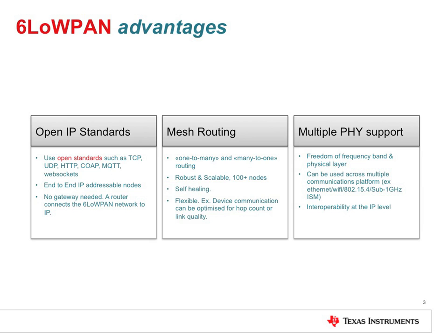There are three distinct advantages to a 6LowPAN system. Firstly, 6LowPAN uses open IP standards. This includes many well-known standards such as TCP, UDP, HTTP, and WebSockets that many developers are already familiar with. Another advantage is the lack of an application layer gateway. The only functionality needed on the edge router is a bridge between the RF and Ethernet network. This bridge is incorporated in the 6LowPAN stack, allowing transparent Internet integration.